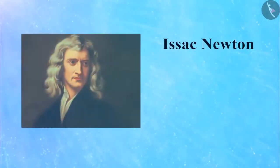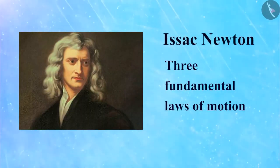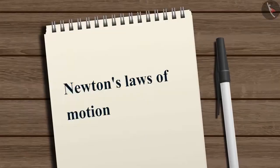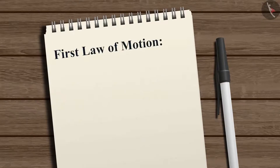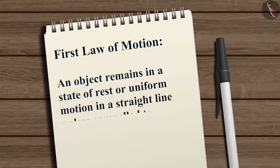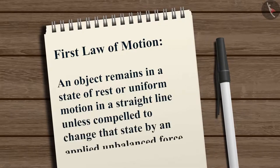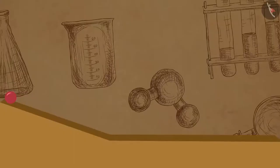Isaac Newton further studied Galileo's ideas and presented three fundamental laws of motion, known as Newton's laws of motion. The first law of motion states that an object remains in a state of rest or uniform motion in a straight line unless compelled to change that state by an applied unbalanced force. This means an object will maintain its original state and will resist any kind of change.